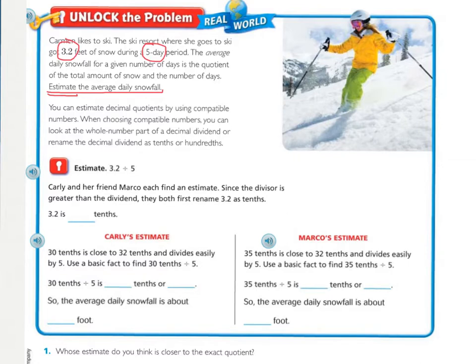They gave you a hint here about how to find the average. The snowfall is three and two-tenths, and the average is the quotient of the snowfall and the number of days, which is five. So that's how we came up with the problem of three and two-tenths divided by five.